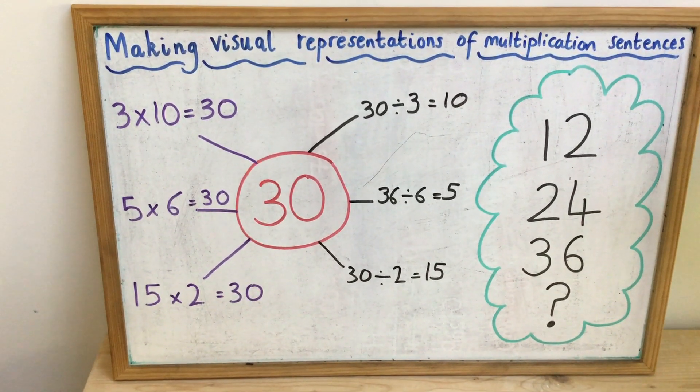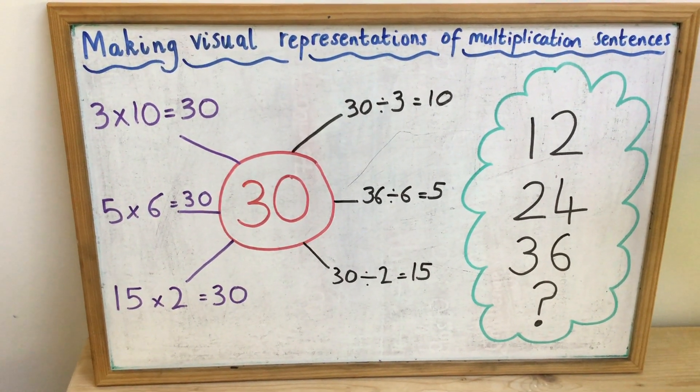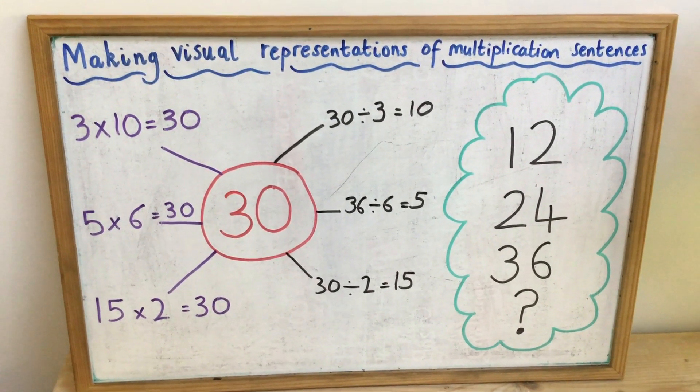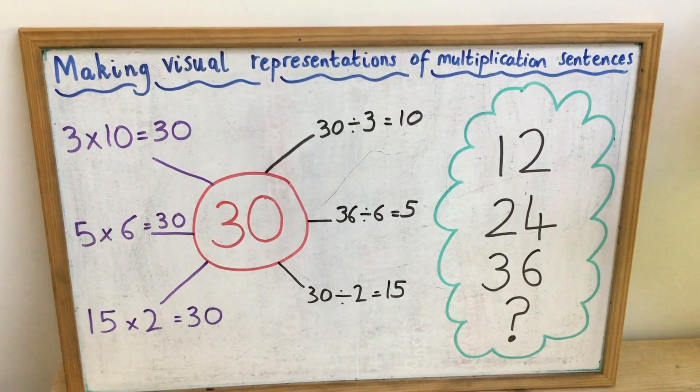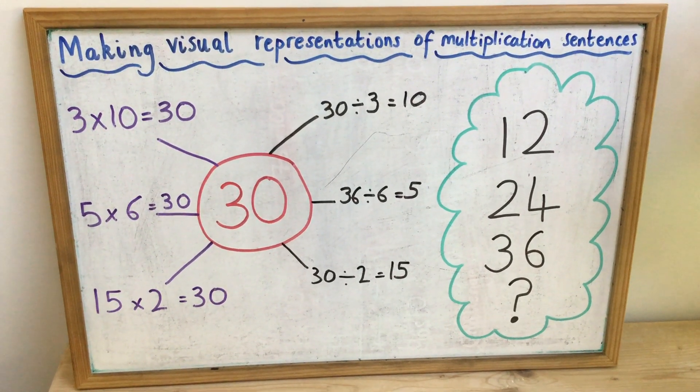We know that 15 times 2 is 30. And therefore, 30 divided by 2 is 15. So today, you are going to be making your own visual representations of multiplication sentences.